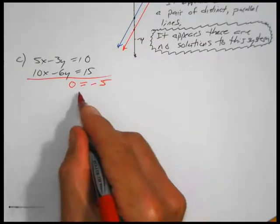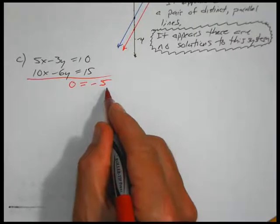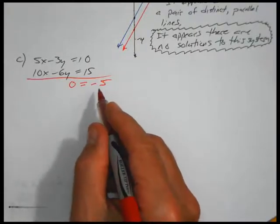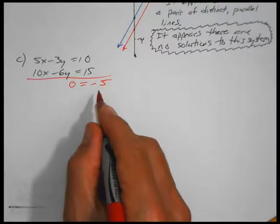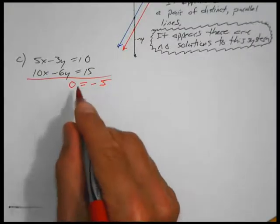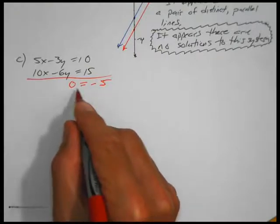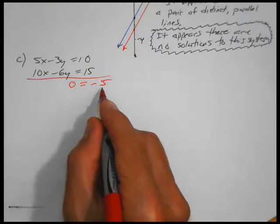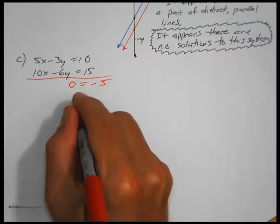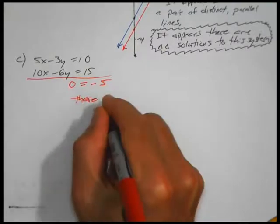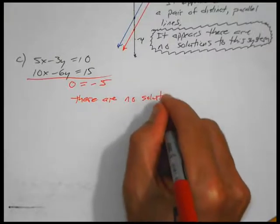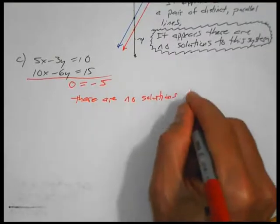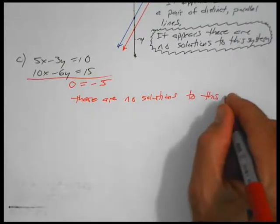We arrive at 0 = −5. No matter what we choose for any x, y pair, we can never make this true. When you combine two equations and arrive at something that can never be true regardless of what you choose for x and y, you have a situation of no solutions.